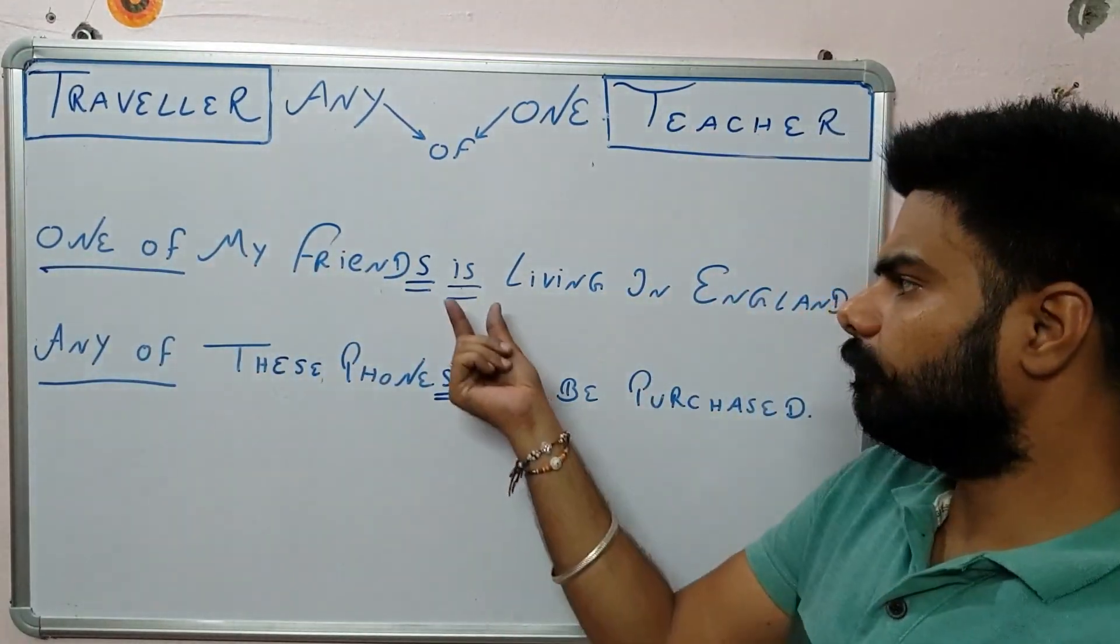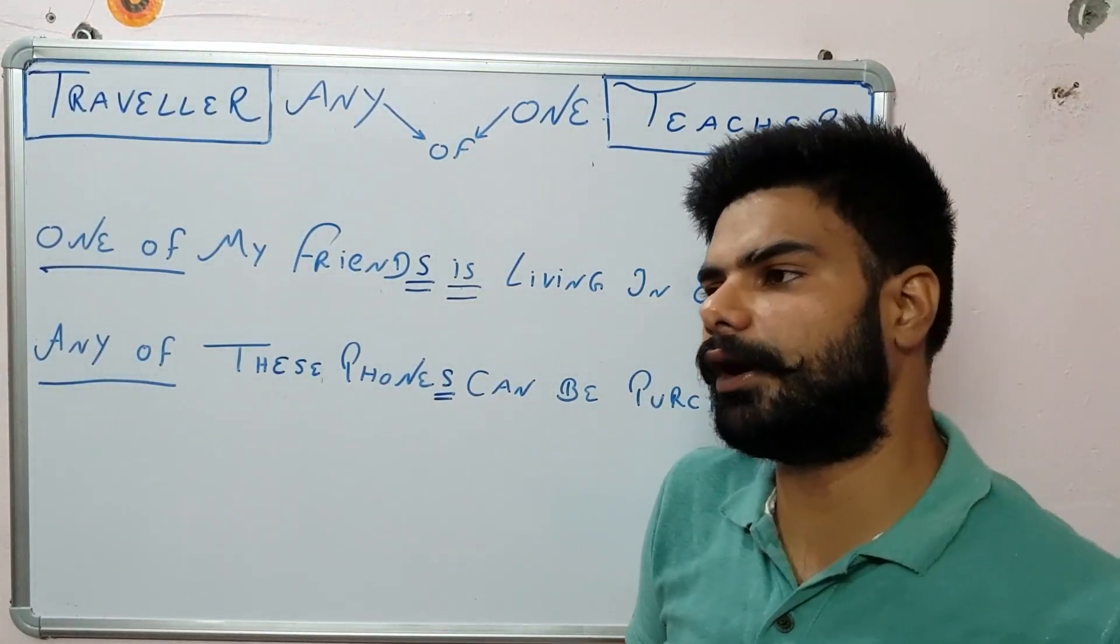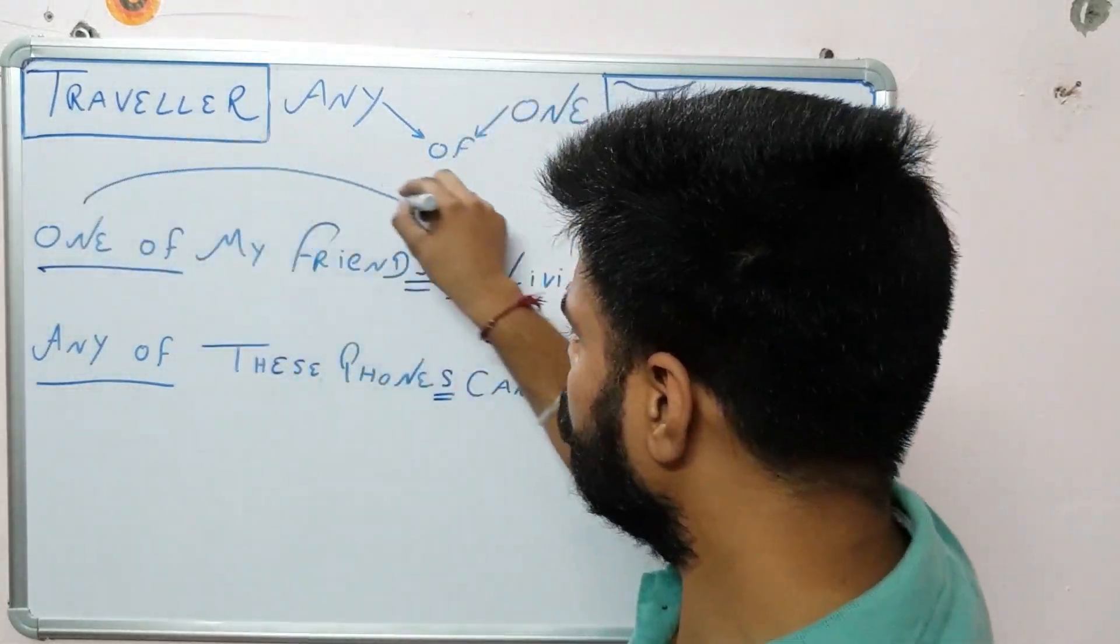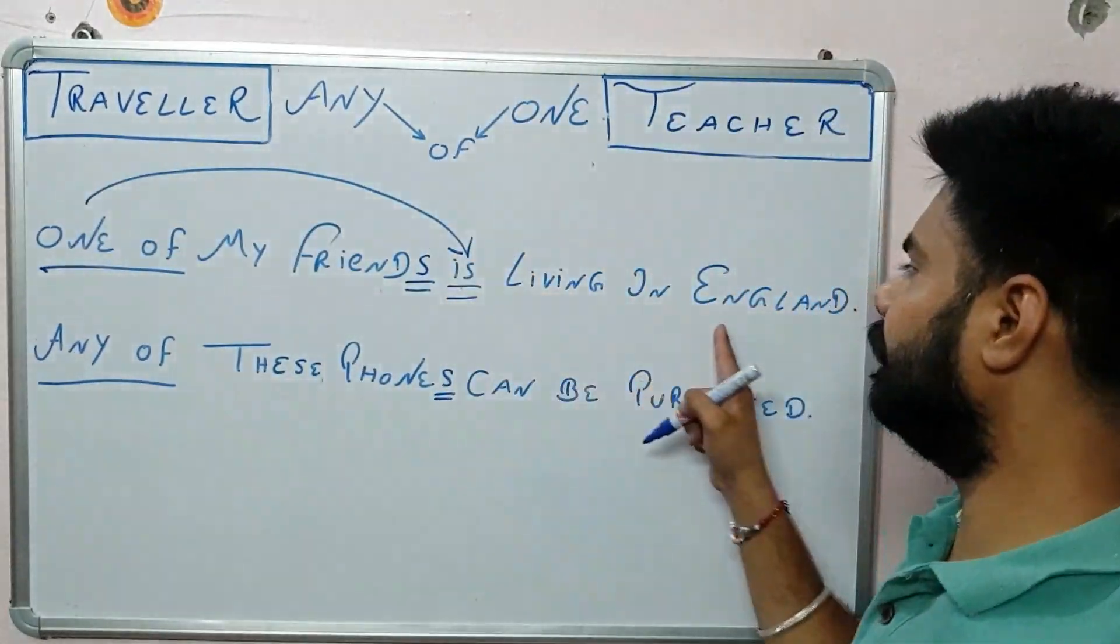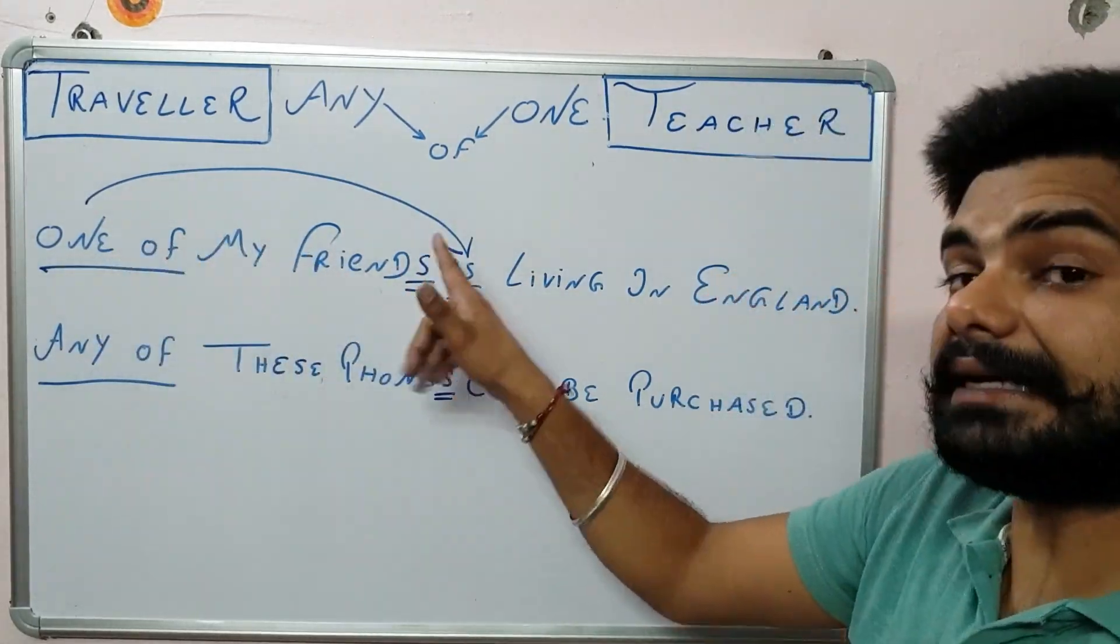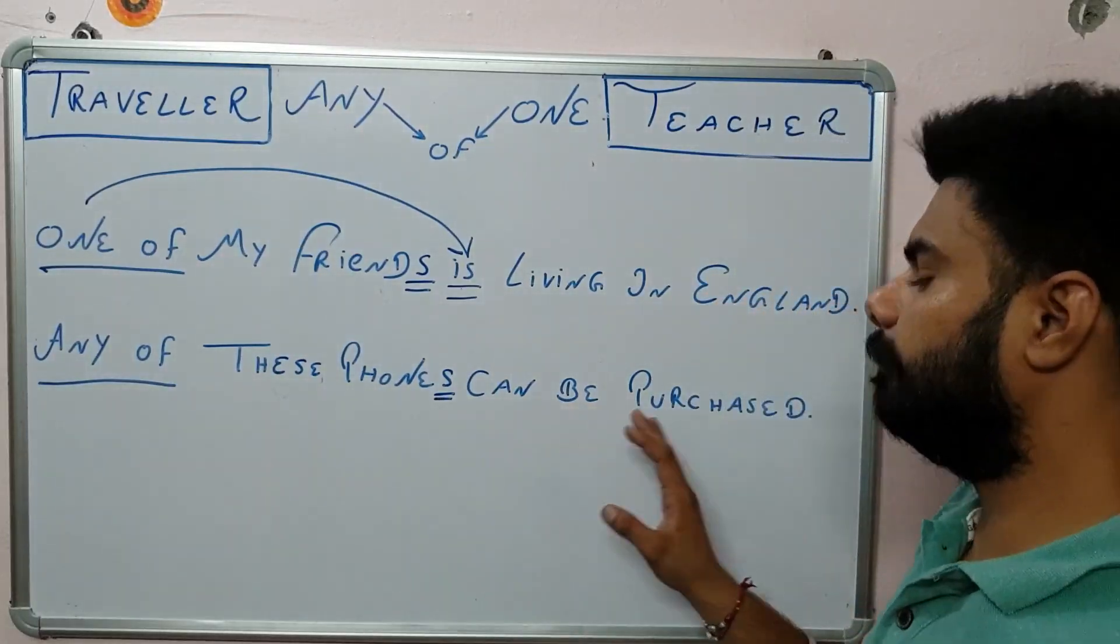Now, why are we putting a single verb over here? Because at the end point, at the ultimate point, we are using is because only one is there. So one of my friend is living in England. How many friends are living in England? One of my friends is living in England.